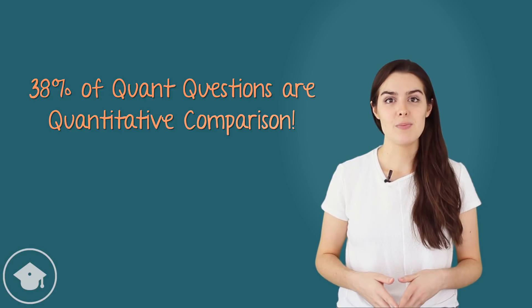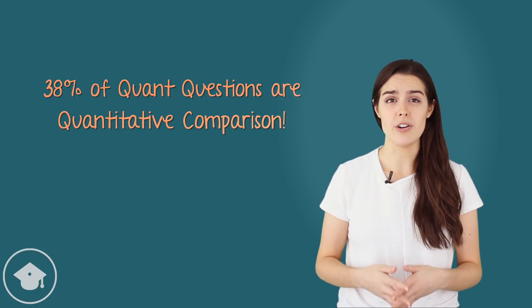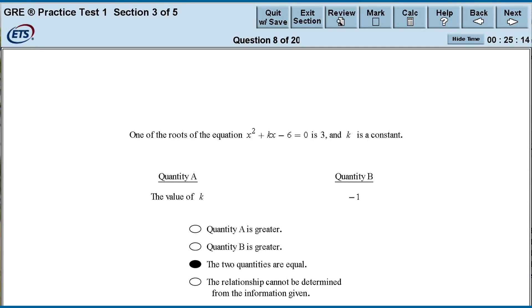Unfortunately, quantitative comparison is a particularly weird question type. Here are the basics. Each quantitative comparison question has the same structure. First, we have the question stem. The question stem provides us background information for the problem that we can assume to be true. The question stem can take many forms. It may be a sentence or sentences, an equation, a diagram, or some combination of the three. Sometimes, when the problem requires no background information, there is no question stem at all.